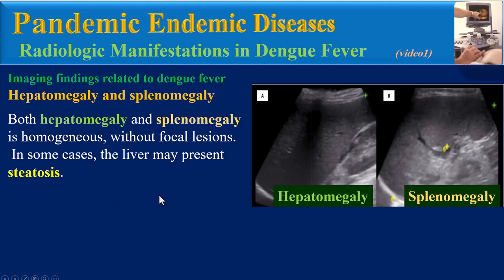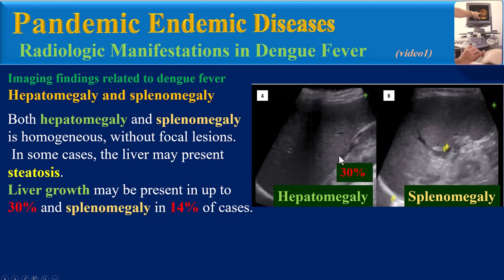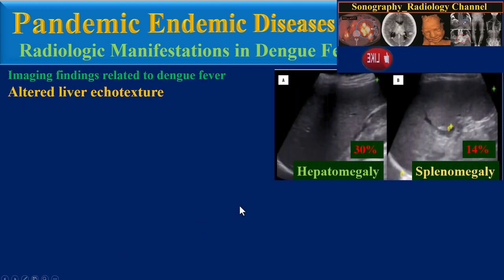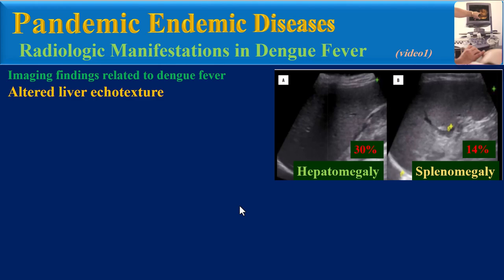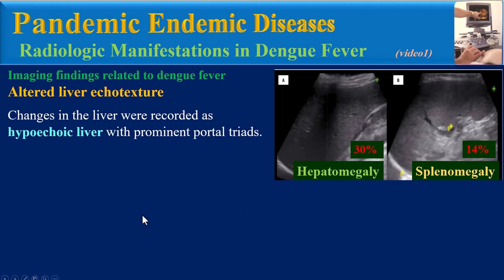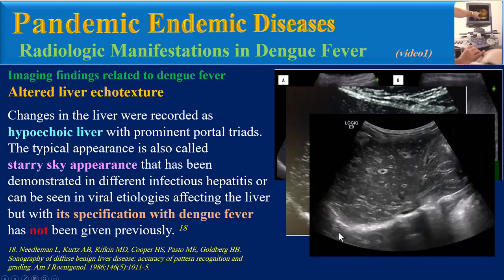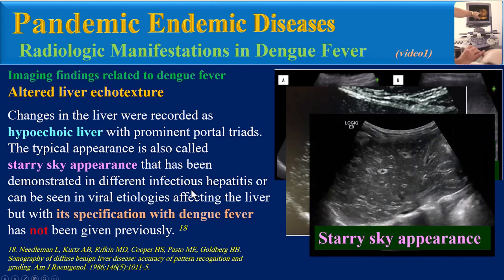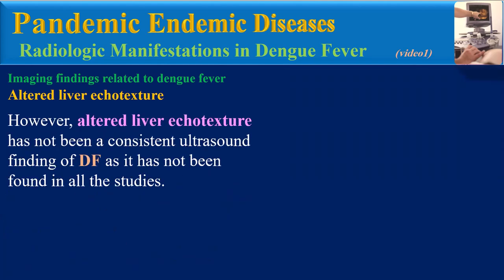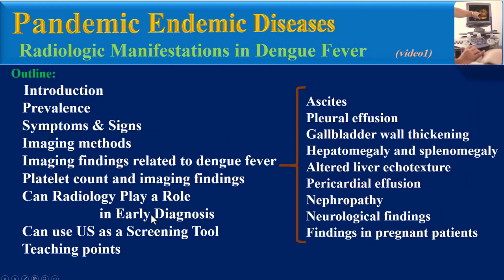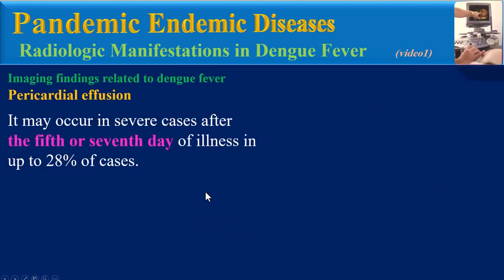Both hepatomegaly and splenomegaly are homogeneous without focal lesions; in some cases the liver may present steatosis or fatty liver. Liver enlargement may be present in up to 30% of cases and splenomegaly in 14% of cases. Regarding altered liver echotexture, although hepato and splenomegaly show homogeneous echotexture, there are reports of altered liver echotexture recorded as hypoechoic liver with periportal tracking. The typical appearance — called 'starry sky' appearance — has been demonstrated in different infectious hepatitis and viral etiologies affecting the liver. However, altered liver echotexture has not been a consistent ultrasound finding in dengue fever.